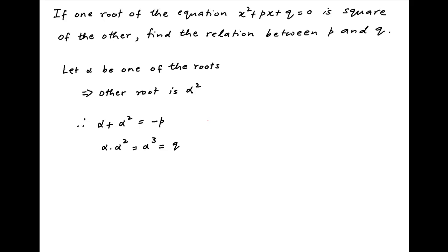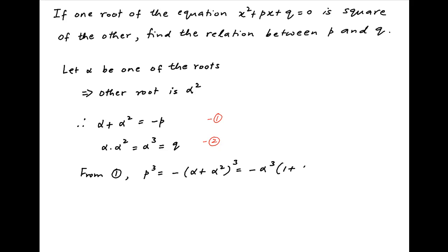Let's call these results 1 and 2 respectively. Now taking the cube of both sides of result 1, we get p cubed equals minus of (alpha plus alpha squared) cubed, which equals minus alpha cubed times (1 plus alpha) cubed.